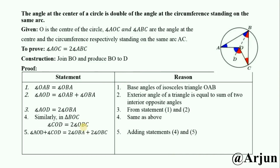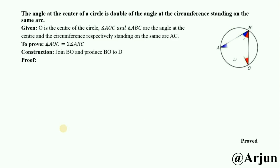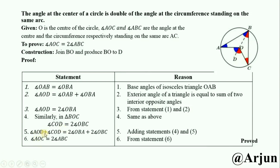Statement 5: Adding statements 3 and 4, angle AOD plus angle COD equals two times angle OBA plus two times angle OBC. Therefore, angle AOC equals angle AOD plus angle COD, and taking 2 as common, two times (OBA + OBC) equals two times angle ABC. Hence, angle AOC equals two times angle ABC. Thank you for watching.